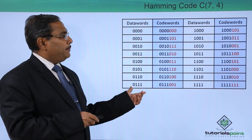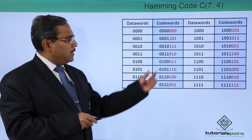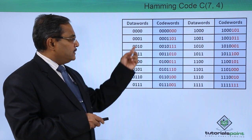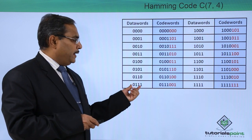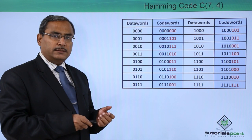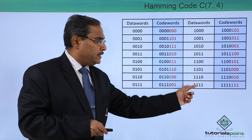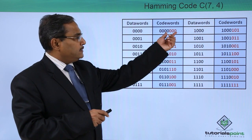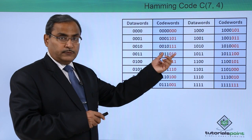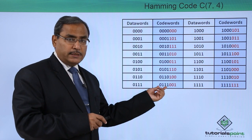Now, here we have the Hamming code C(7,4). There are 7 bits in the code words, out of which 4 bits are the data words. So 4 bits will have 16 combinations — 8 combinations and another 8 combinations, making 16 total. The last 3 bits are the respective Hamming parity bits calculated from the data bits.